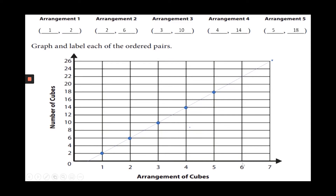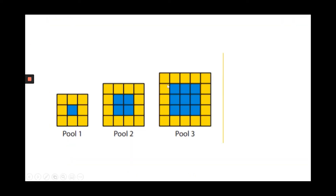What do you think arrangements six and seven would be? Let's draw a line using a straight edge to connect every point — and there is the line that represents our sequence of arrangements. If we were at arrangement six, the graph tells us it would take 22 cubes, and at arrangement seven, 26 cubes. Does that match our pattern where the number of cubes goes up by four each time? 18 plus 4 is 22, and 22 plus 4 is 26. It does!